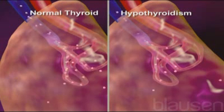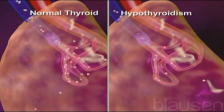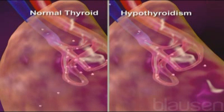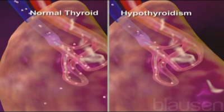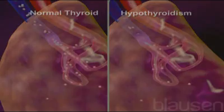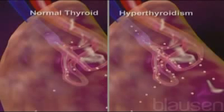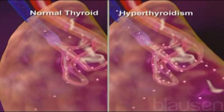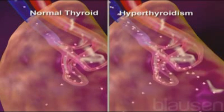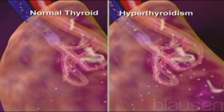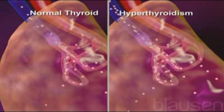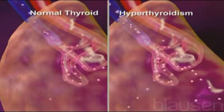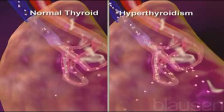Hypothyroidism, or underactive thyroid, is a condition in which the thyroid fails to produce a sufficient amount of hormones necessary for normal cell function. Hyperthyroidism is a disease in which the thyroid produces too many hormones. This imbalance of hormone production can result in symptoms that develop across many organ systems and which can range from mild to severe.